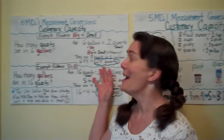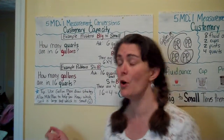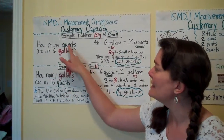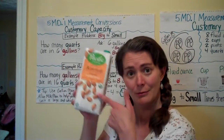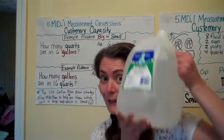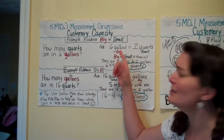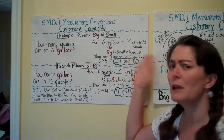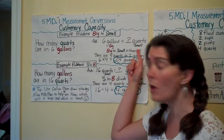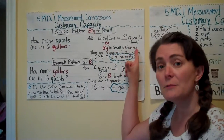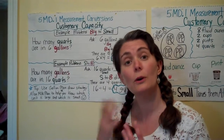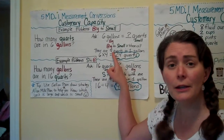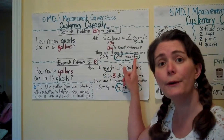Here's an example of big to small using customary capacity. If the question asks how many quarts are in 6 gallons, quarts are smaller than gallons. So: 6 gallons equals how many quarts? Gallons are big, quarts are small — big to small, we times them all. There are 4 quarts in a gallon, so take your known (6 gallons) and multiply by the conversion factor (4). Six times four gives you 24 quarts.